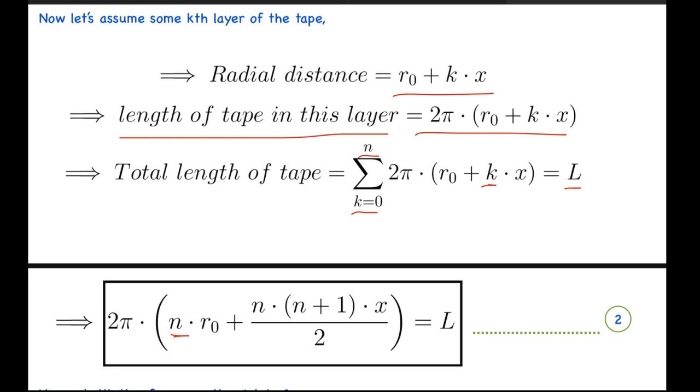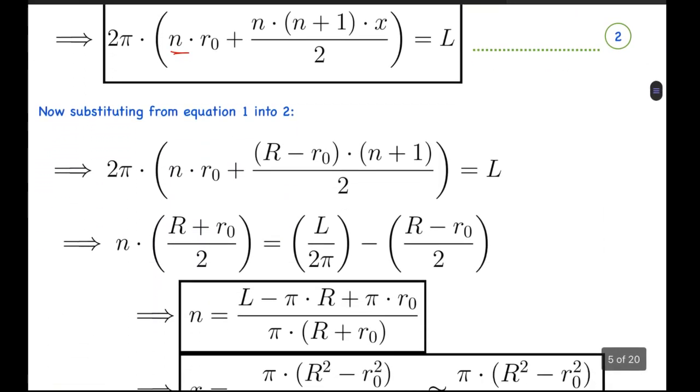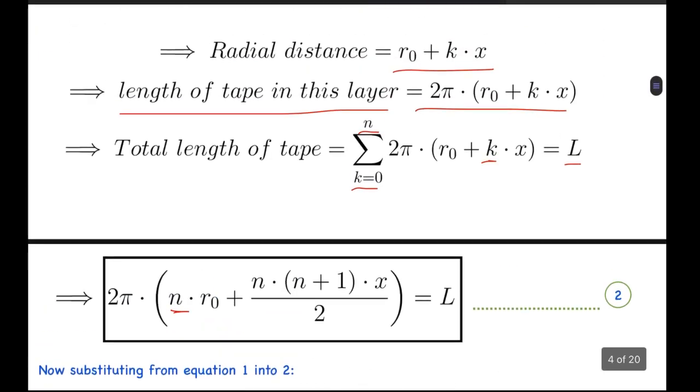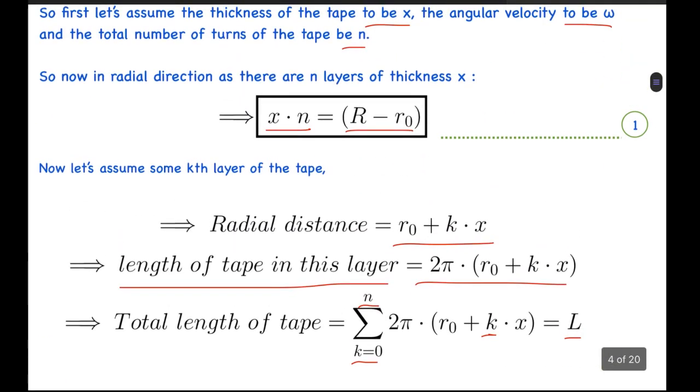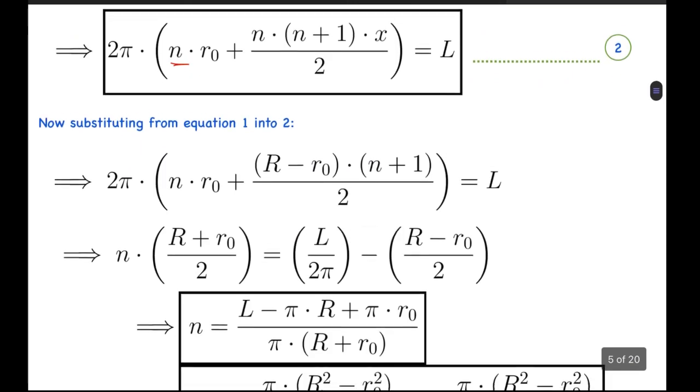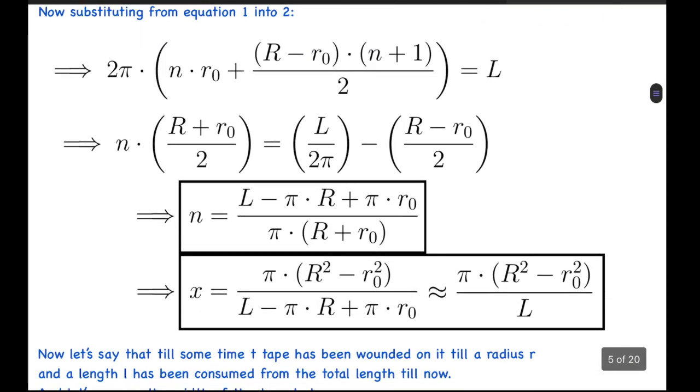So this is eventually what we get as the sum, and this is the second expression we get. Now substituting from equation 1 into equation 2, what we got in equation 1 was x·n equals R minus r0. So substituting it here, what we get is 2π times [n·r0 + (R-r0)(n+1)/2] equals L.